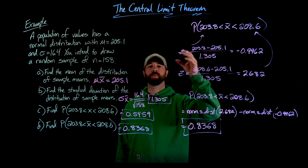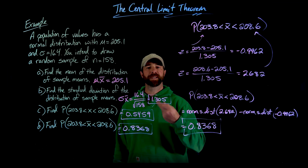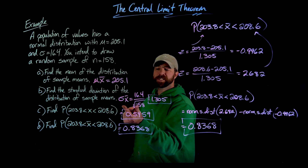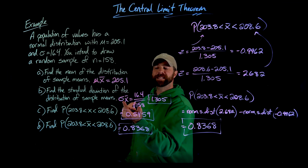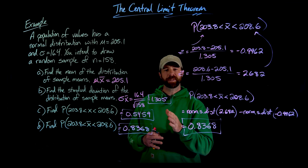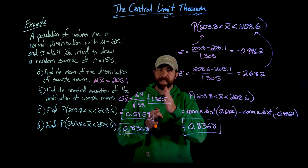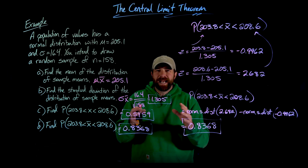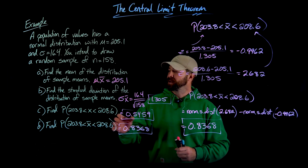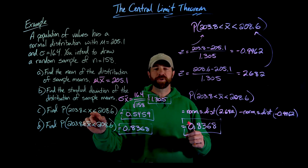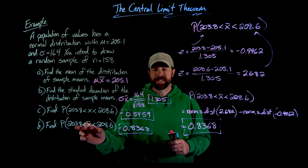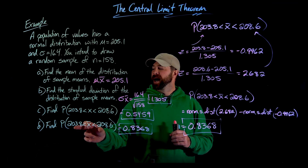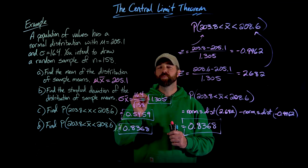To quickly summarize: what we get from the central limit theorem is that when we create this distribution of sample means, it will always be normally distributed no matter the distribution of our original random variable. There is a slight adjustment to the standard deviation — we keep the same mean, but get a standard deviation that's always a little bit smaller. Because standard deviation describes the spread of values from the mean, the distribution of sample means will always be tighter and more dense around the mean — thus, we should expect a higher probability of randomly selecting a value from any interval centered around the mean.